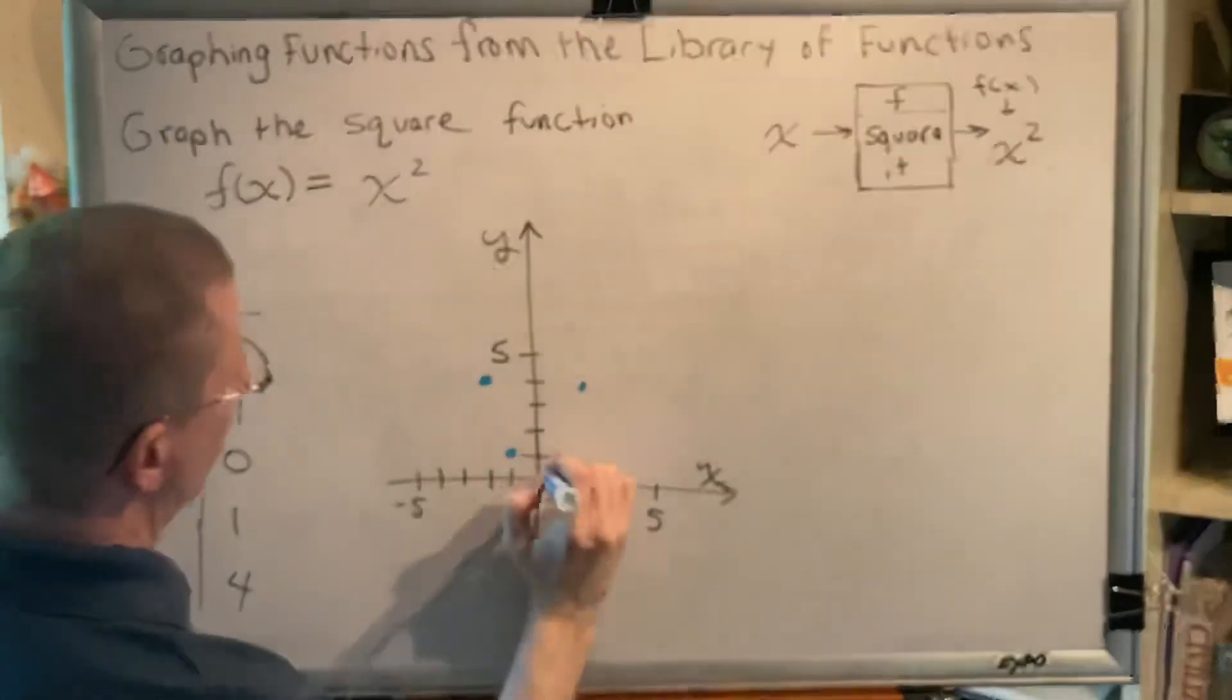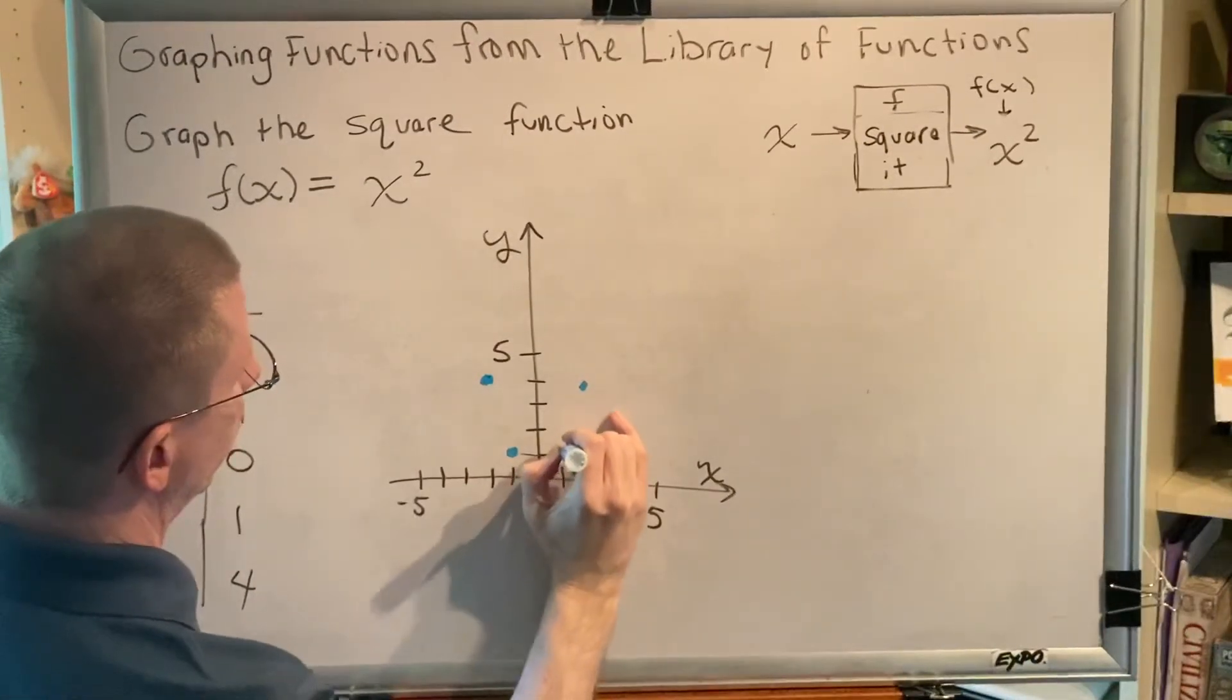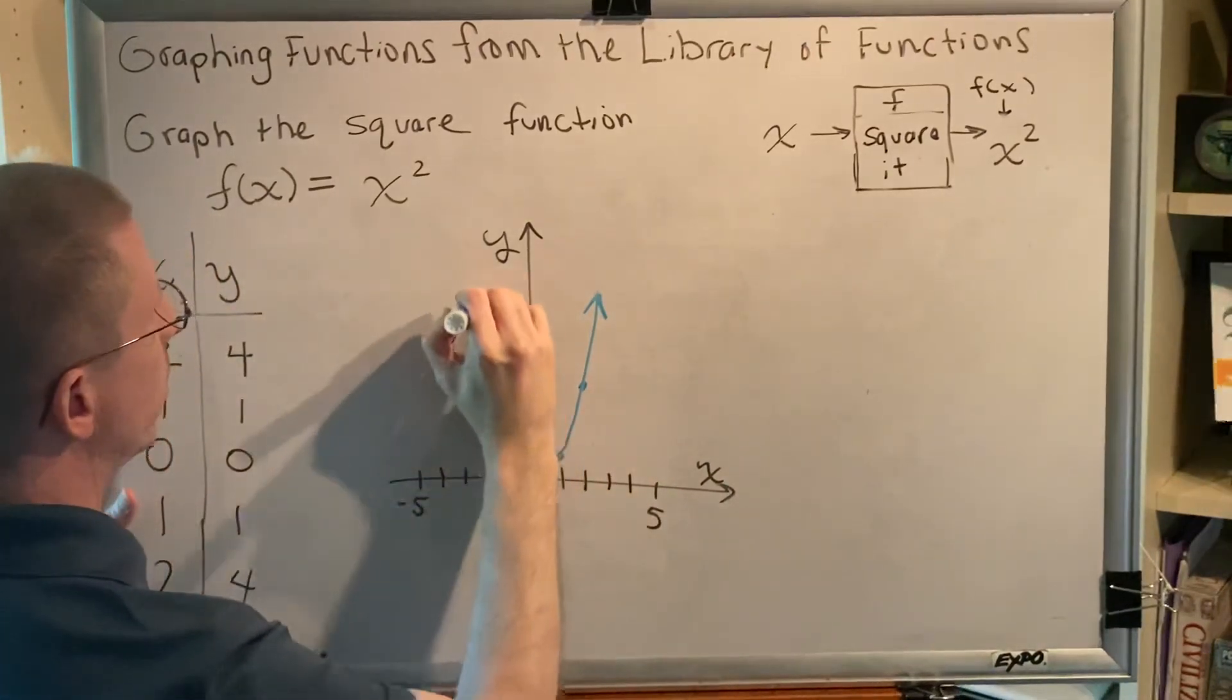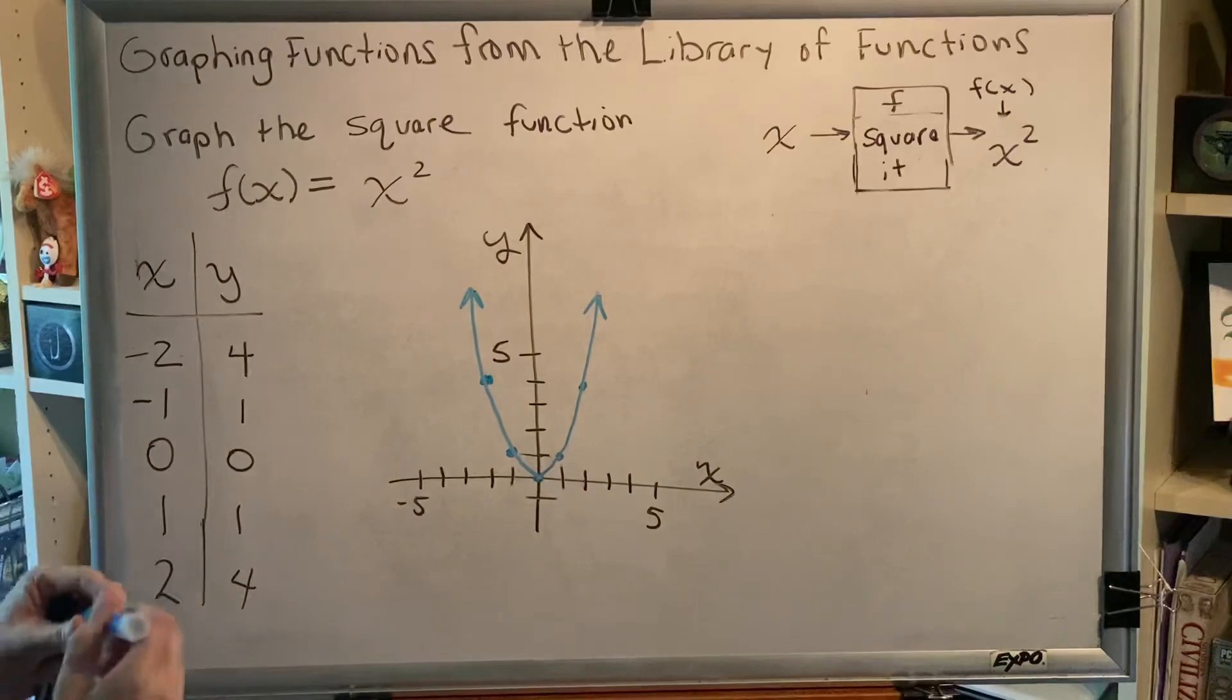This is making a u-shape, a parabola. So, the graph of the square function is an upward opening parabola.